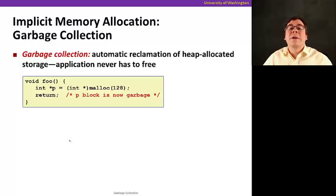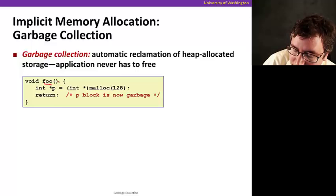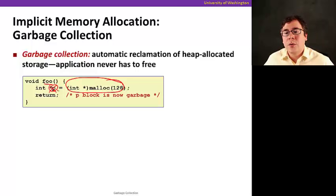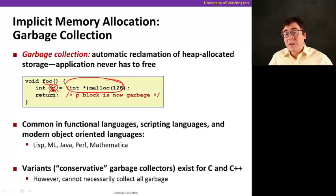It provides automatic reclamation of heap allocated storage. So for example, suppose that you have a function foo that has a pointer p, it allocates, does a malloc. And then when this function returns, this pointer is going to be gone. So there's nothing that points to the allocated block anymore. It means that the block p is now garbage because nobody can reference it. So you can just go and automatically free it. And garbage collection does that. This is automatic freeing of blocks that are no longer useful, that we know are no longer useful.